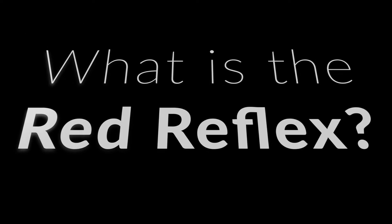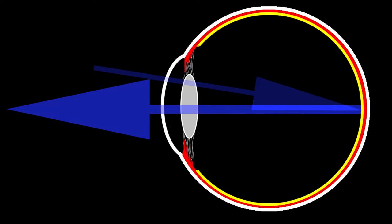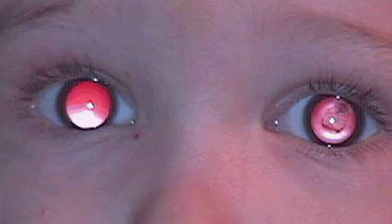What is the red reflex? The red reflex is a reflection of light off of the retina back into the outside world. This is most commonly noticed in old camera pictures where people have a red eye.